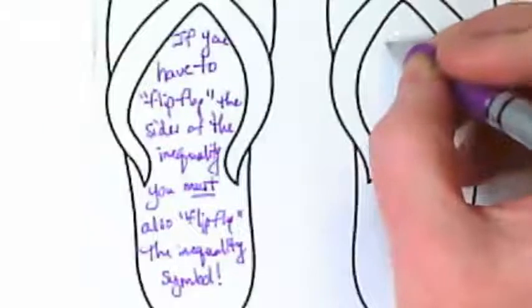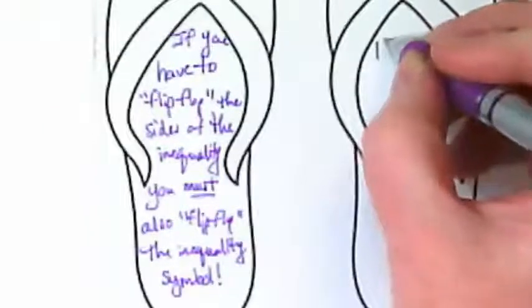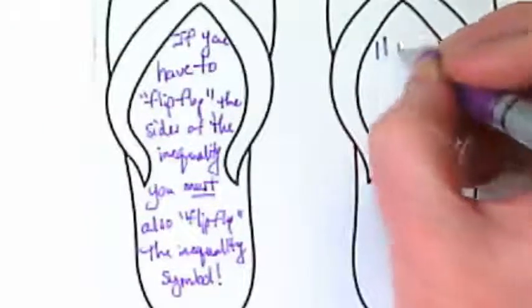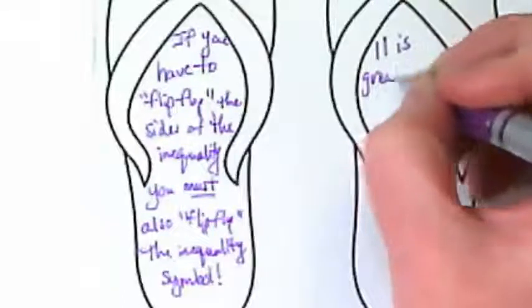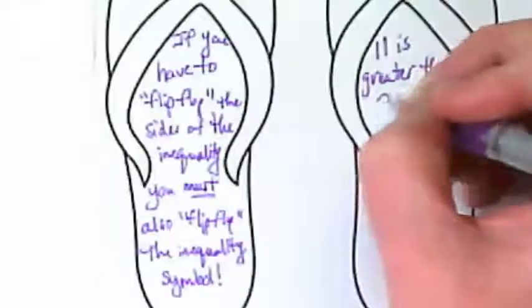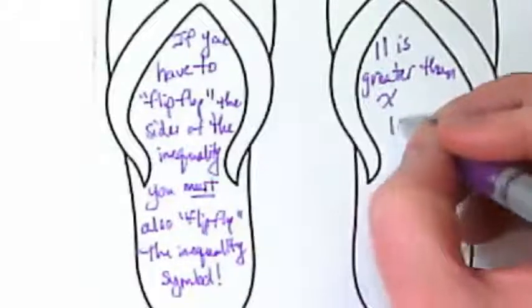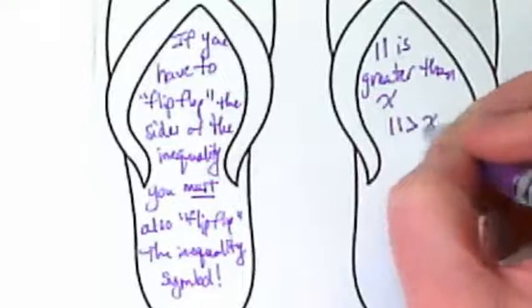We're going to do this with words and symbols. So in an example, if we have 11 is greater than x, it would be written as 11 is greater than x.